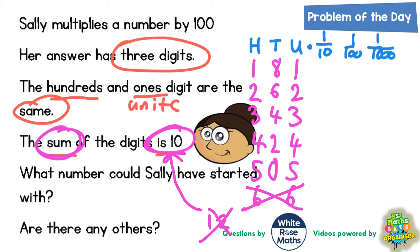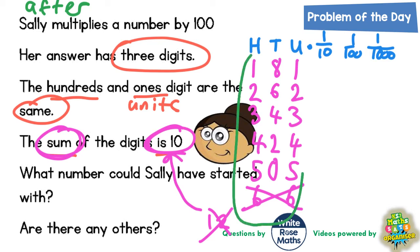So we're going to stop at six and six. Now, it's important to realise that these numbers — 181, 262, 343, 424 and 505 — are what Sally has ended up with after she multiplied her mystery starting number by 100. So to figure out what she started with, we've got to work in reverse. These have all been multiplied by 100 already, so we've got to divide by 100 to figure out where the starting numbers would be.